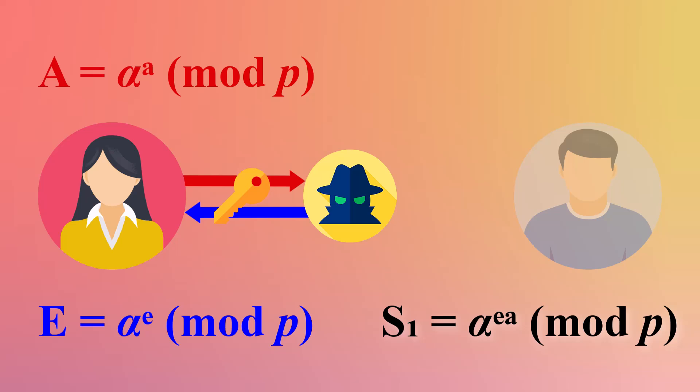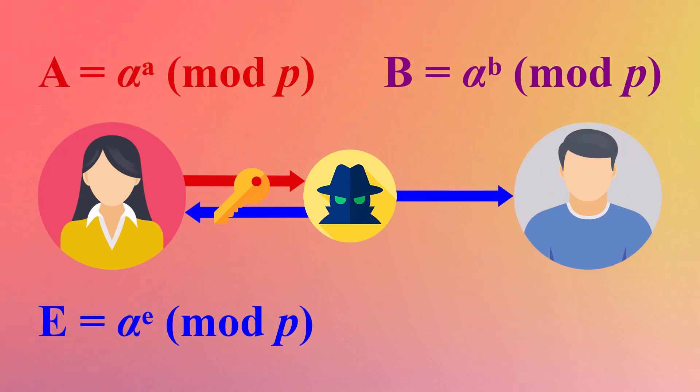Eve then sends her public value E to Bob, making him think it came from Alice. Bob calculates his public value B and sends it, unaware that Eve is intercepting it.